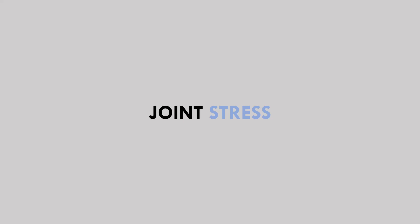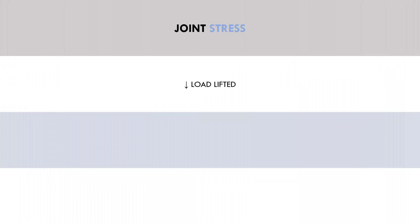The second primary benefit of metabolite style training is less joint stress. Because rest periods are shorter, lighter loads are used, involving lower forces on the joints and connective tissue. This means trainees may be able to handle more weekly volume before joints become irritated. For example, a trainee limited to 10 weekly sets of direct bicep training due to joint pain may find that replacing some of that volume with metabolite style training reduces overall joint stress, potentially allowing them to push up to 12 or 14 sets without developing joint pain.